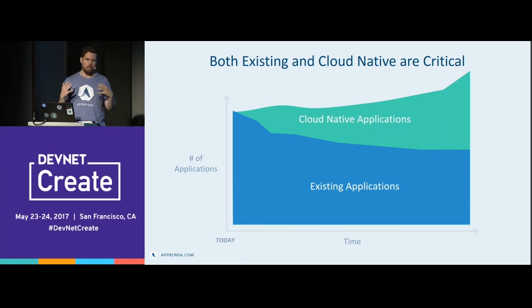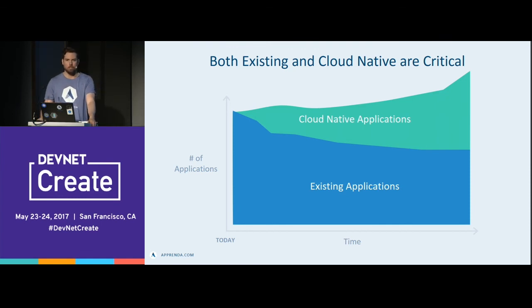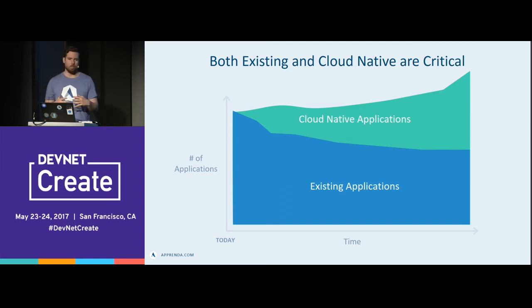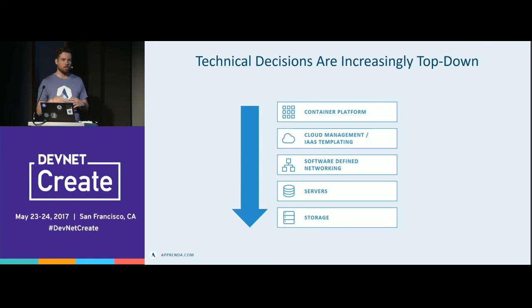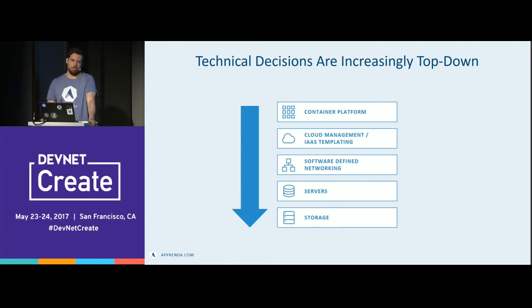So where are we now? For those of you that work in a large organization, you have hundreds or thousands of applications developed over the past 20 to 30 years. But you have this Cambrian explosion of applications currently being developed in cloud-native models, and the number just keeps growing. They're starting off small, but in the future they'll probably overtake everything we have in our data centers. A lot of these technical decisions on what to use to build cloud-native applications are coming from the top down — it's no longer IT making all the decisions.